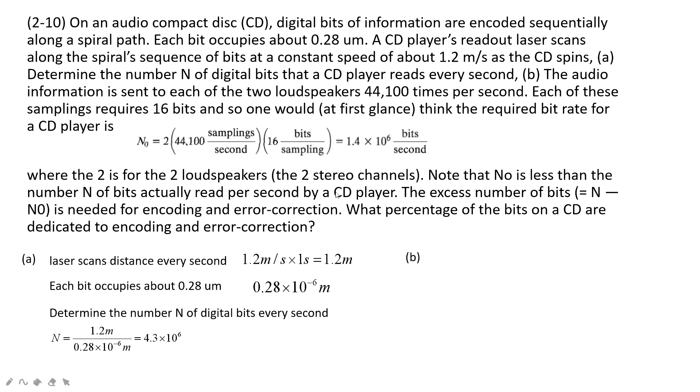The second problem asks us to find the error correction. What is error correction? It tells us the excesses number of bytes. So n minus n0 is the error correction. The percentage of this error correction used is n minus n0 divided by n.